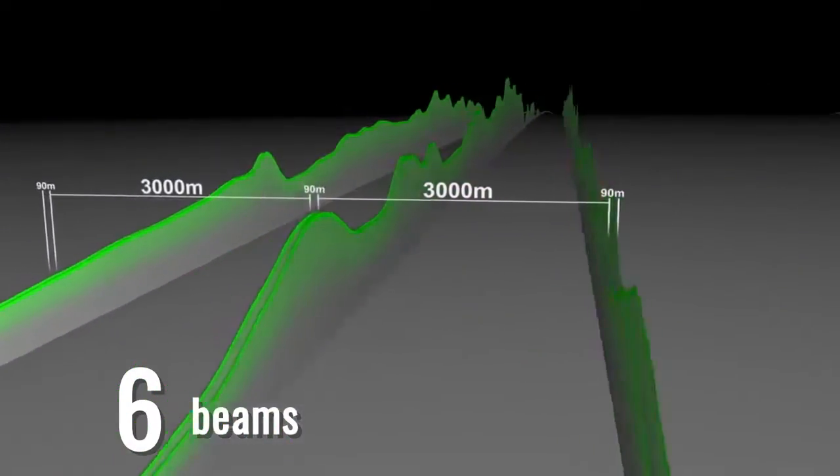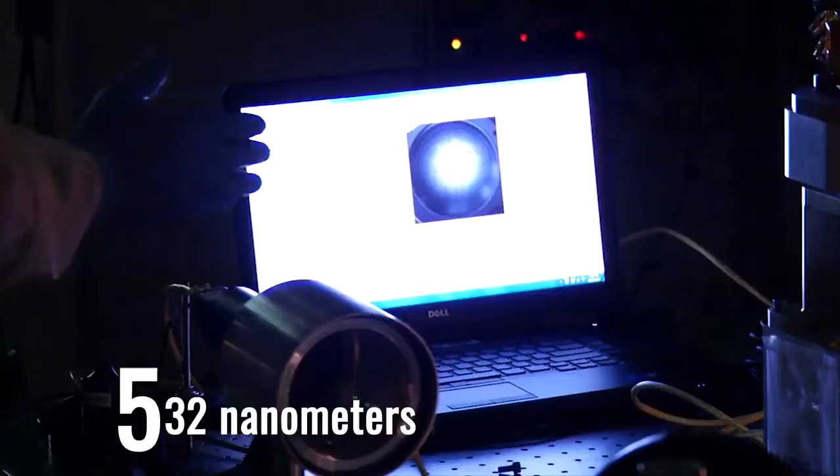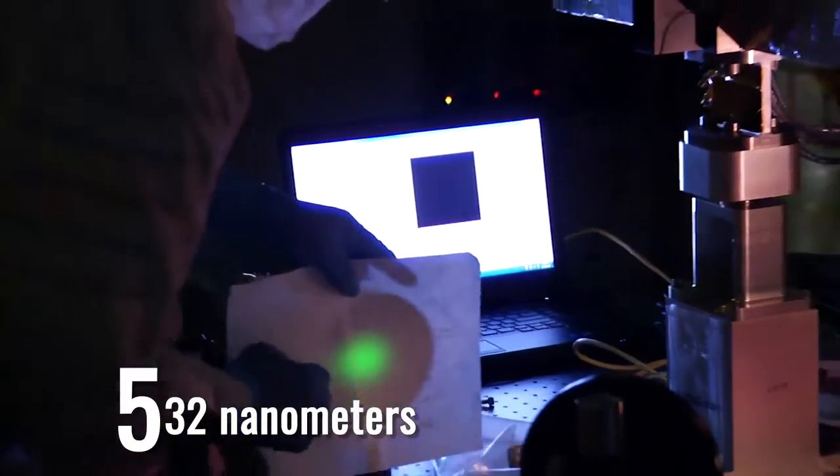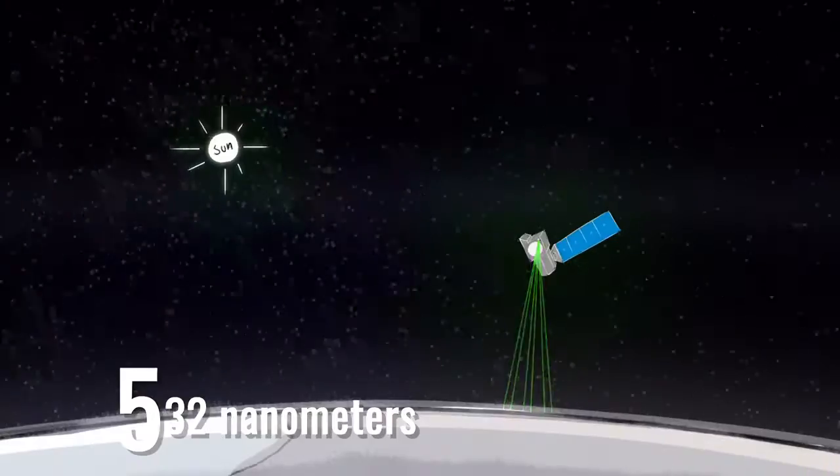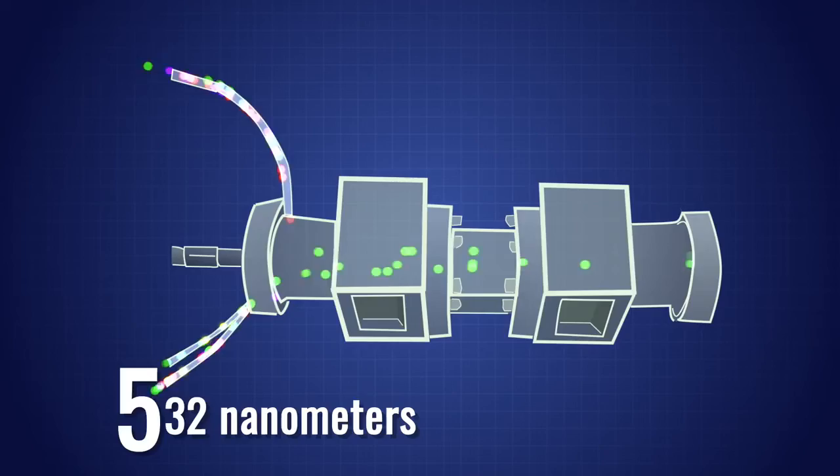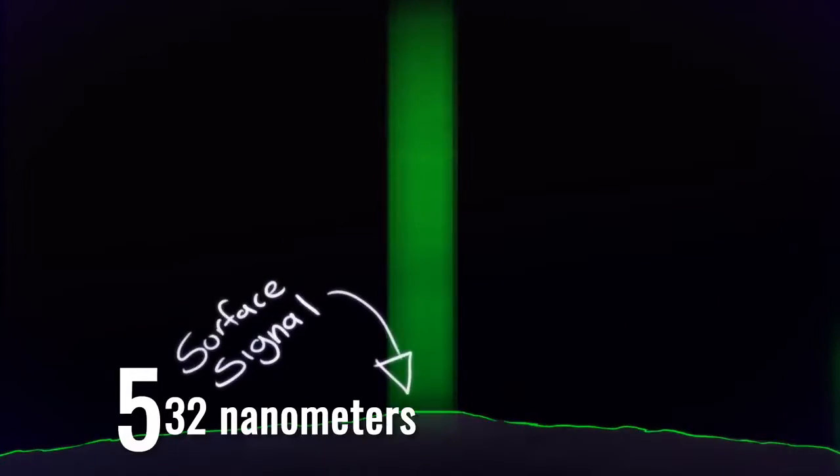and allow scientists to assess the slope of the surface they're measuring. Five hundred and thirty-two nanometers, the wavelength of the bright green laser. When these laser photons return to the satellite, filters block any light that's not exactly at this wavelength, keeping the amount of data noise down.